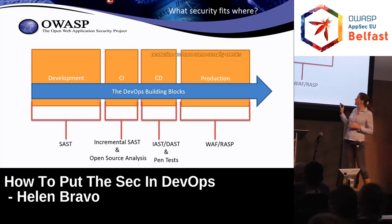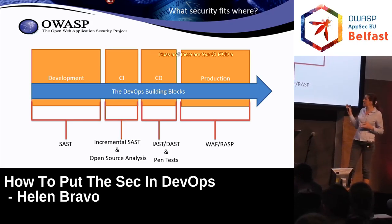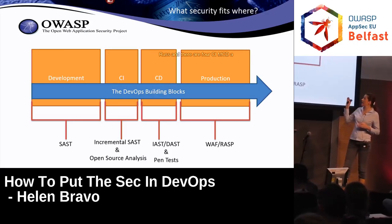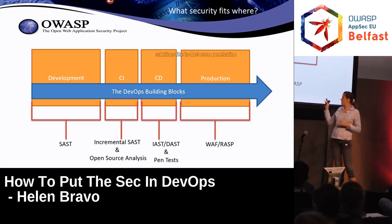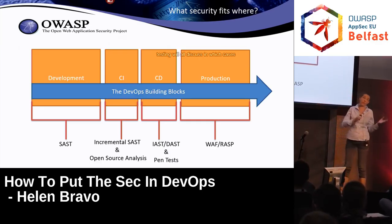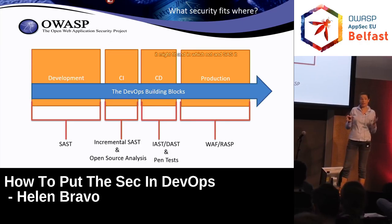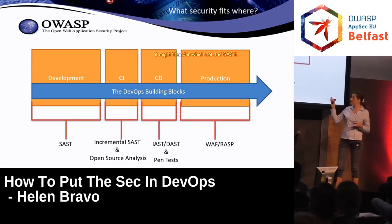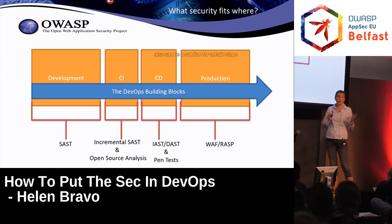In production, we have security checks like WAF and RASP. For CI and CD, there are solutions like DAST, even penetration testing — we'll discuss in which cases those might fit and in which not. And SAST can also be a solution for certain steps.